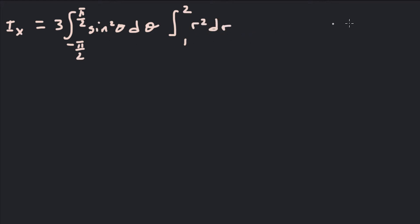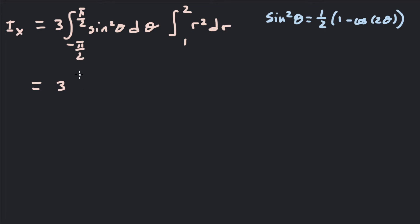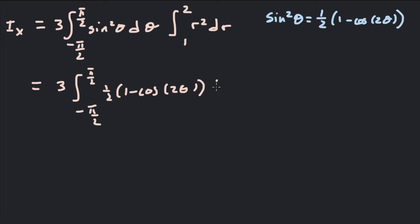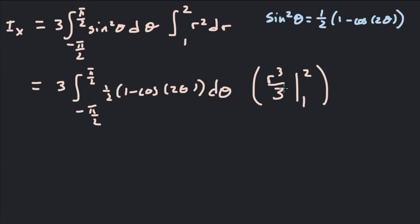For the first integral we use the trig identity: sin²θ = ½(1 − cos 2θ). For the r integral, we get r³/3. So this becomes 3 times the integral from −π/2 to π/2 of ½(1 − cos 2θ) dθ, times r³/3 evaluated from 1 to 2. The 3 and the 1/3 cancel. Then 2³ − 1³ = 8 − 1 = 7.